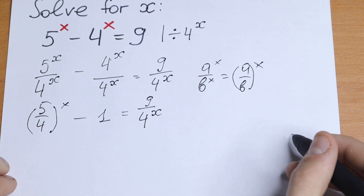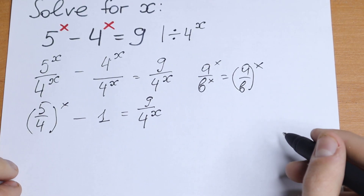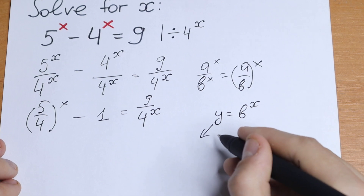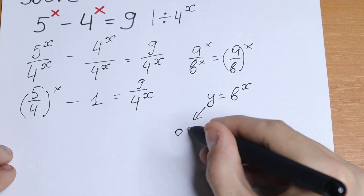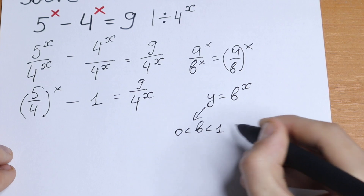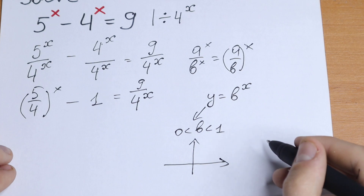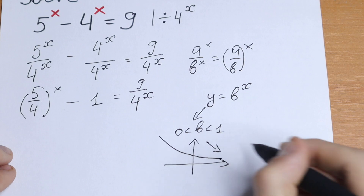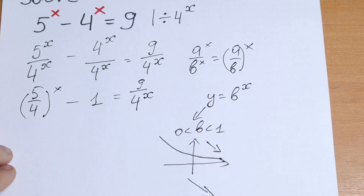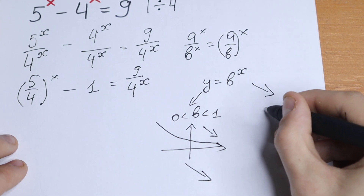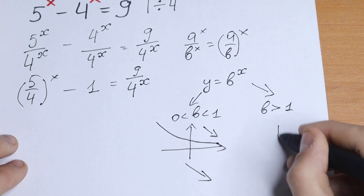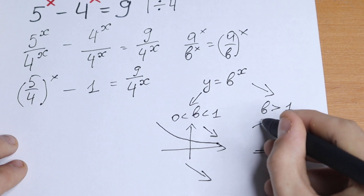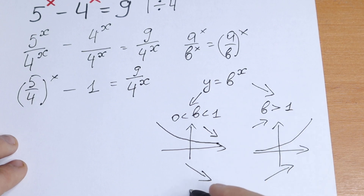What are we going to do next? I want to show you about the exponential function — the function y equal to b to the power x. We will have two cases. The first case is when our b is between 0 and 1; the graph will look like a decreasing function. The second case is if b is greater than 1; we will have the same situation but the graph will be an increasing one. So: decreasing function and increasing function.